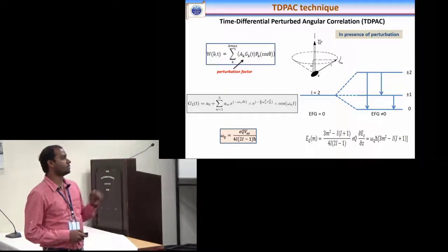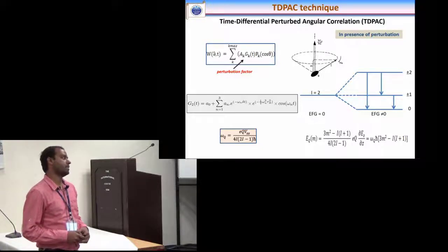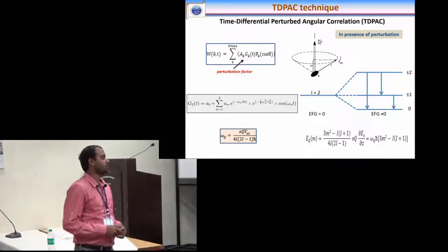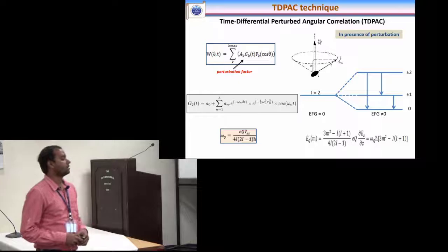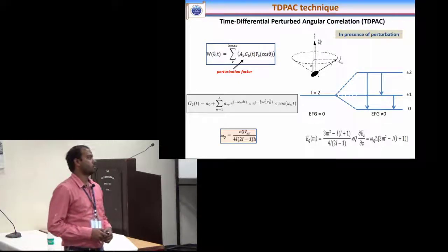The angular correlation between the two gamma rays will be perturbed by this perturbation factor which is a function of time and we can access this perturbation factor and then calculate the quadrupole frequency and hence the quadrupole moment for the nuclei.